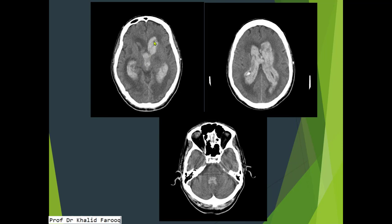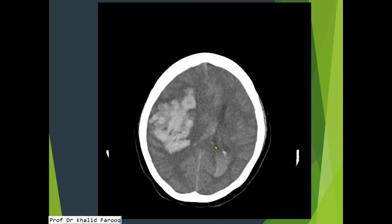Another example of intraventricular hemorrhage — the high density collection involves the third ventricle, frontal horns, and occipital horns of the lateral ventricles. Hemorrhage fills the entire lateral ventricles on either side. A hemorrhage component is also noted in the fourth ventricle. Additionally, there is brain parenchymal hemorrhage with significant mass effect.